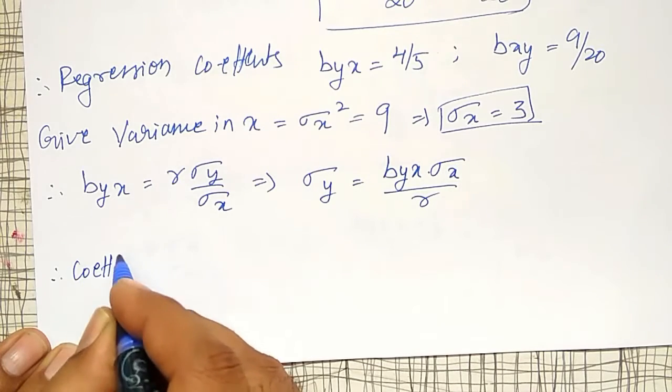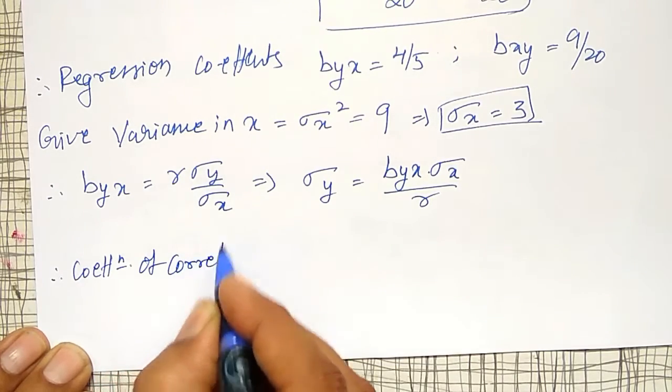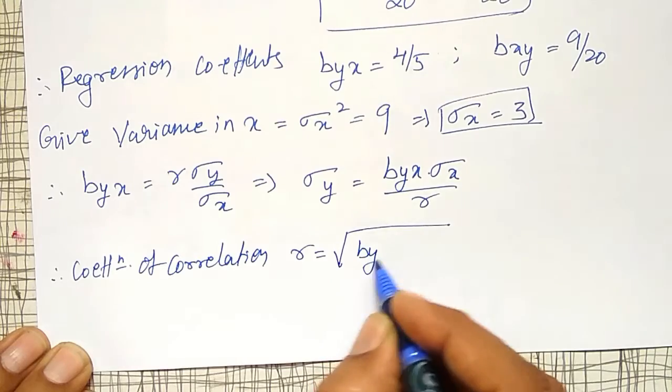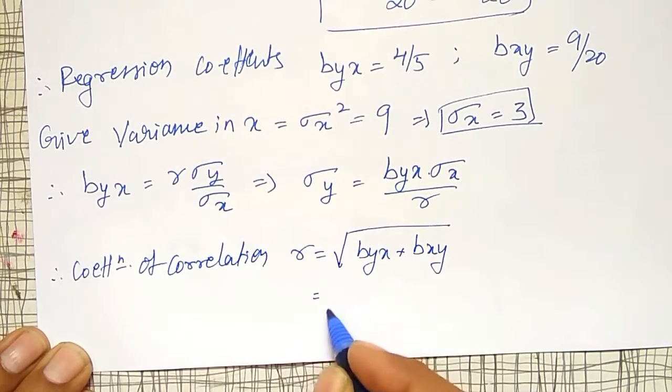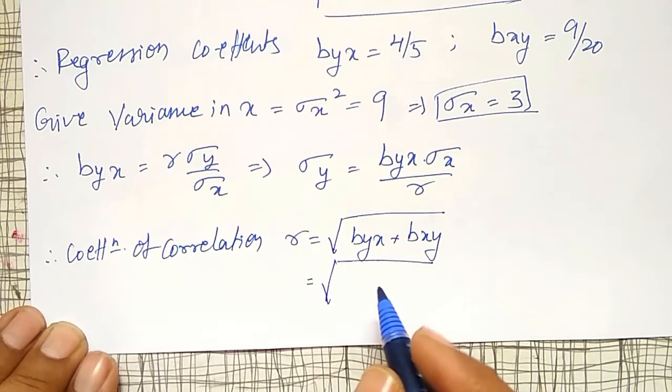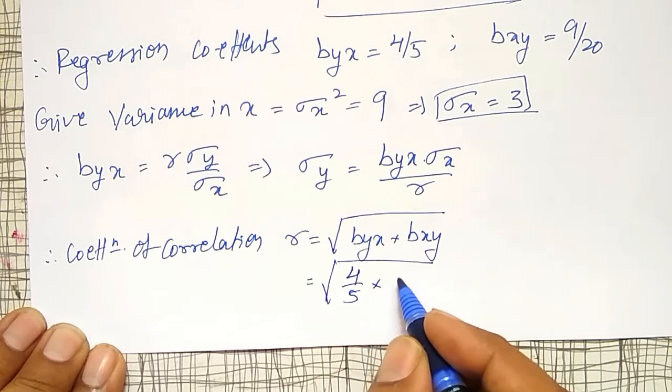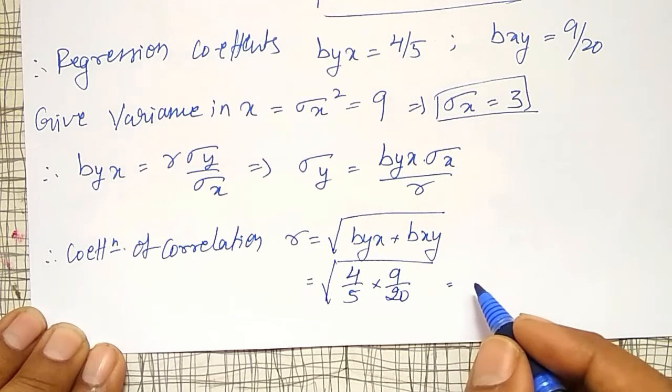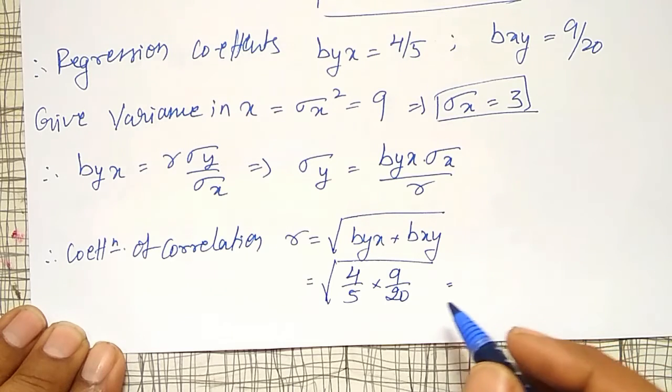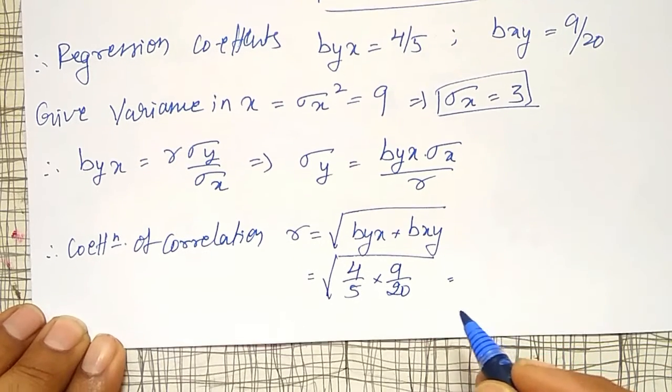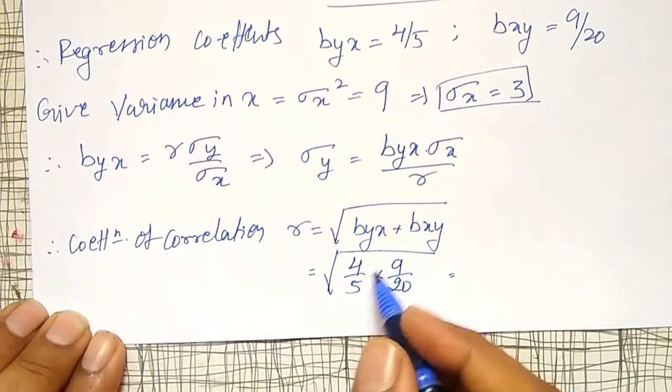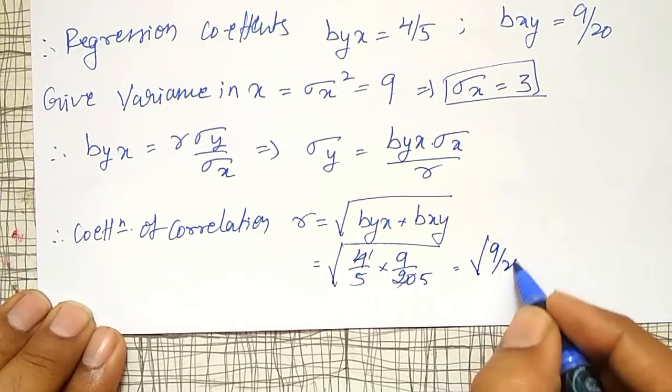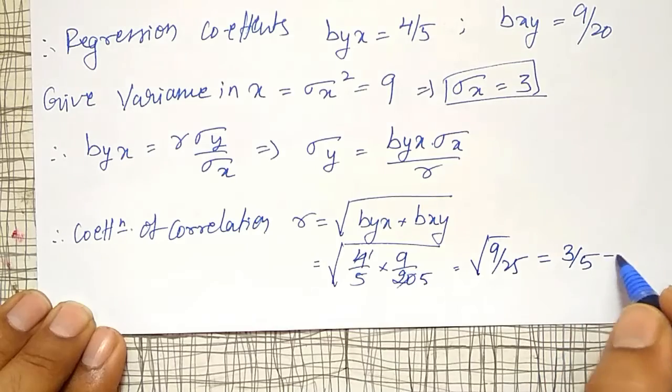r is equal to, from the regression lines it is given by √(byx·bxy). That is square root of 4/5 into 9/20. That is equal to, I can write it as square root of 9/25, which is equal to 3/5 is my r.